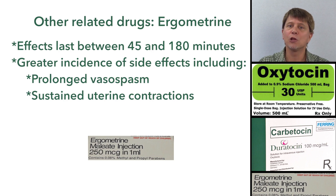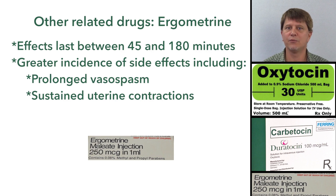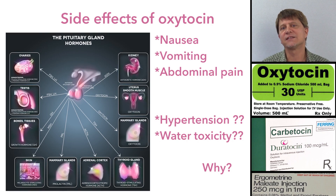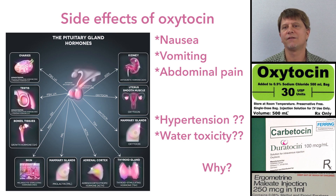Ergometrine has a longer-lasting contraction of the uterine muscles than oxytocin. However, when they're used in combination there is a greater incidence of side effects, for instance the possibility of sustained contractions after the birth of the child. The side effects of oxytocin alone are relatively uncommon — nausea, vomiting, and abdominal discomfort are the most common.